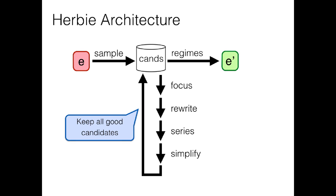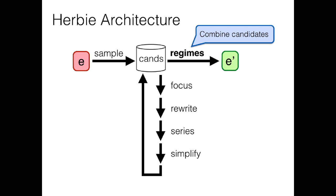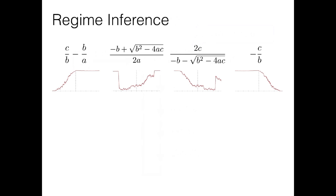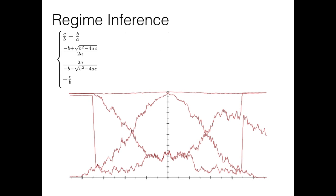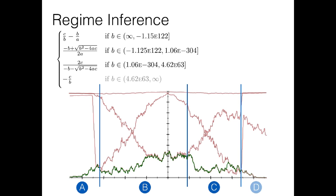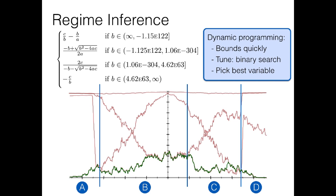The idea here is pretty simple. Here we have the error graphs of four different candidate programs that we've generated in the course of the loop. What we want to do is imagine overlaying all four candidate error graphs on top of each other. And then we can walk along the bottom of this graph, picking out for each point the expression that is most accurate on it. In Herbie we do this walking along step using a dynamic programming algorithm. That lets us find the approximate bounds for each of these regions really quickly, and which we can then tune with binary search. We pick the variable b, the one I've been using throughout this, just by trying every variable possible and picking the one that works best.